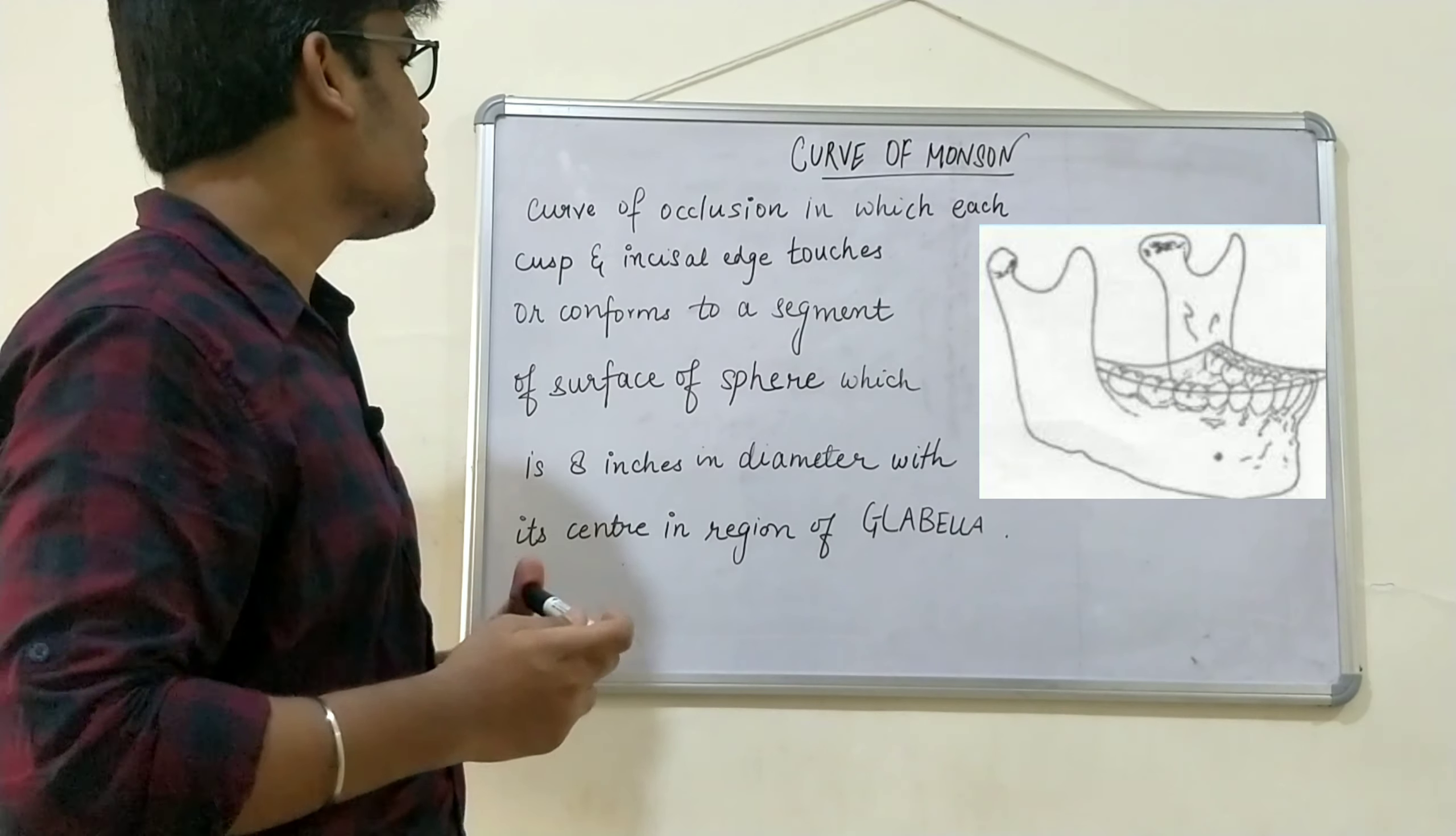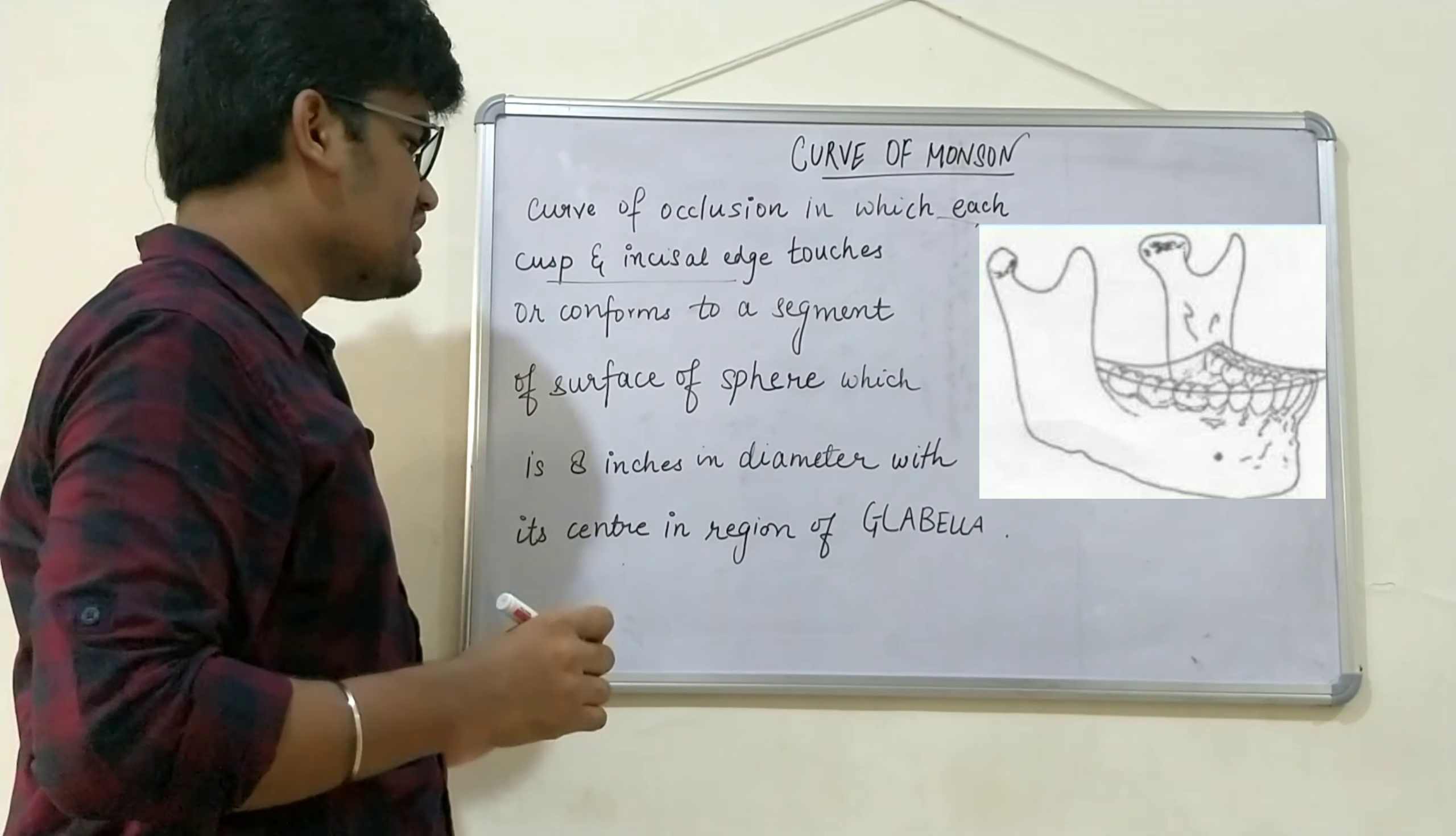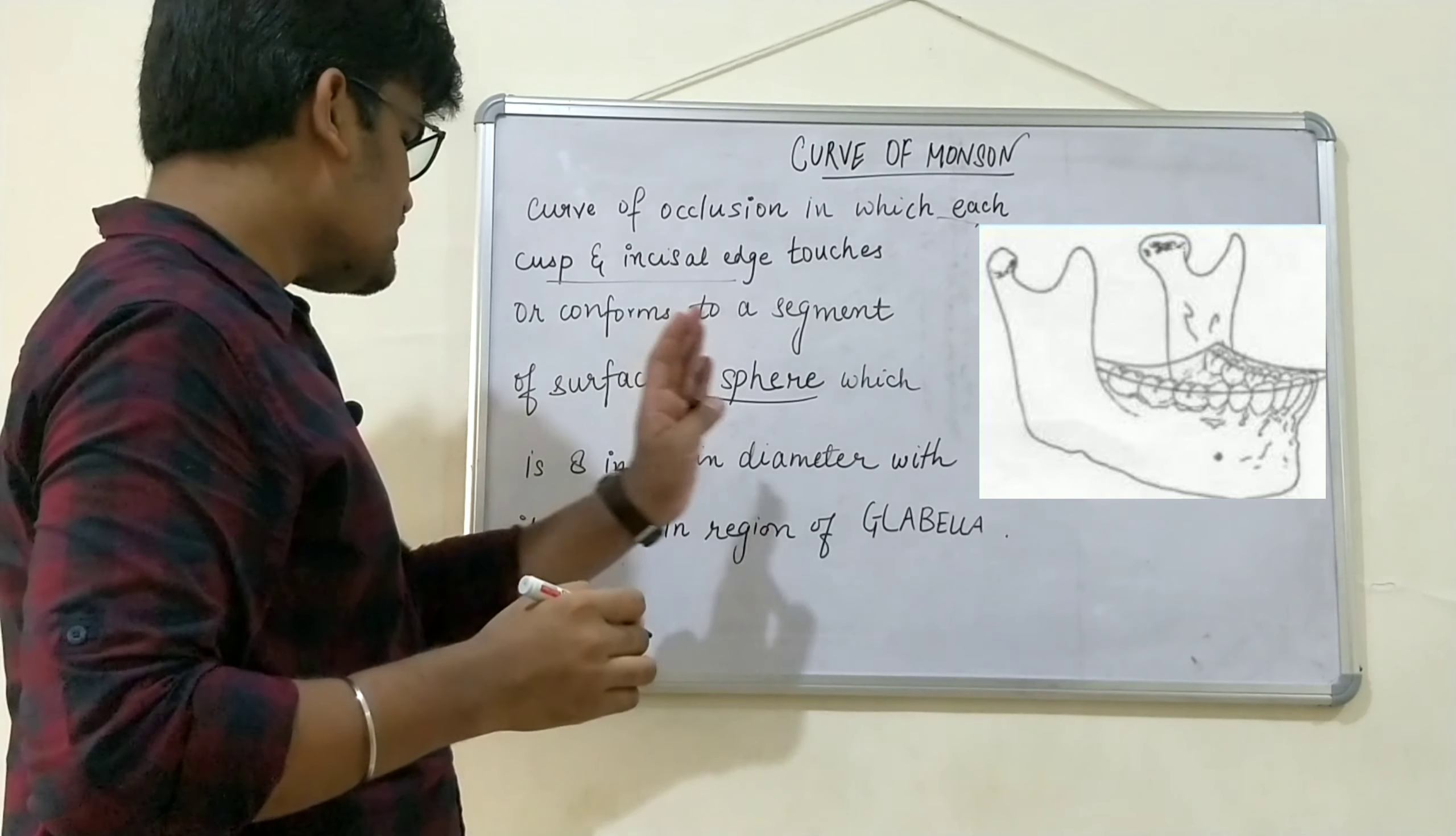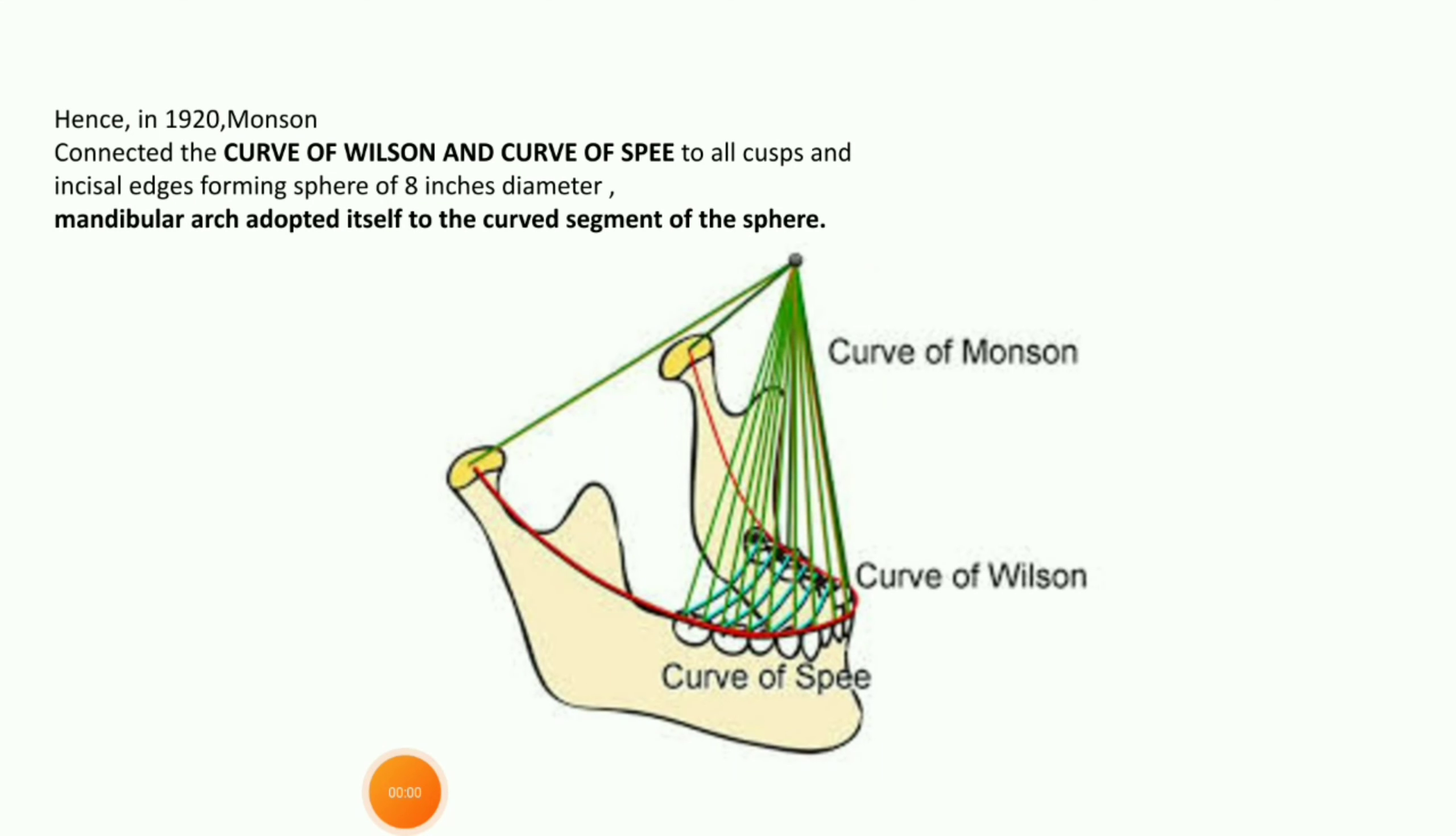Moving on to curve of Monson. It is the curve of occlusion in which each cusp and incisal edge conforms to a segment of the surface of a sphere—a sphere which is eight inches in diameter with its center in the region of glabella. Hence, curve of Monson is the curve which forms by the connection of both curve of Wilson and curve of Spee.